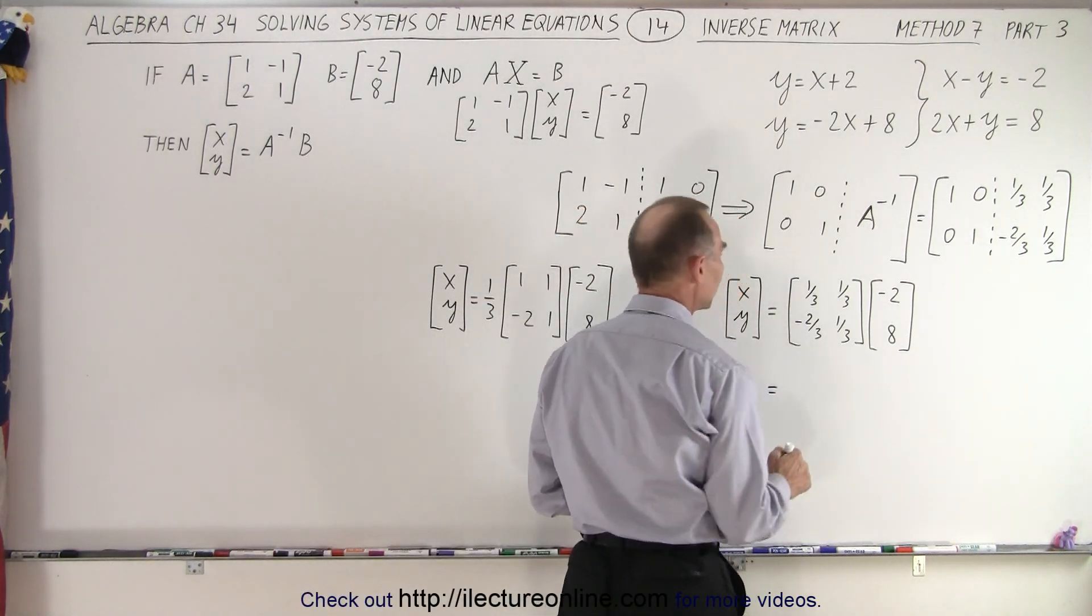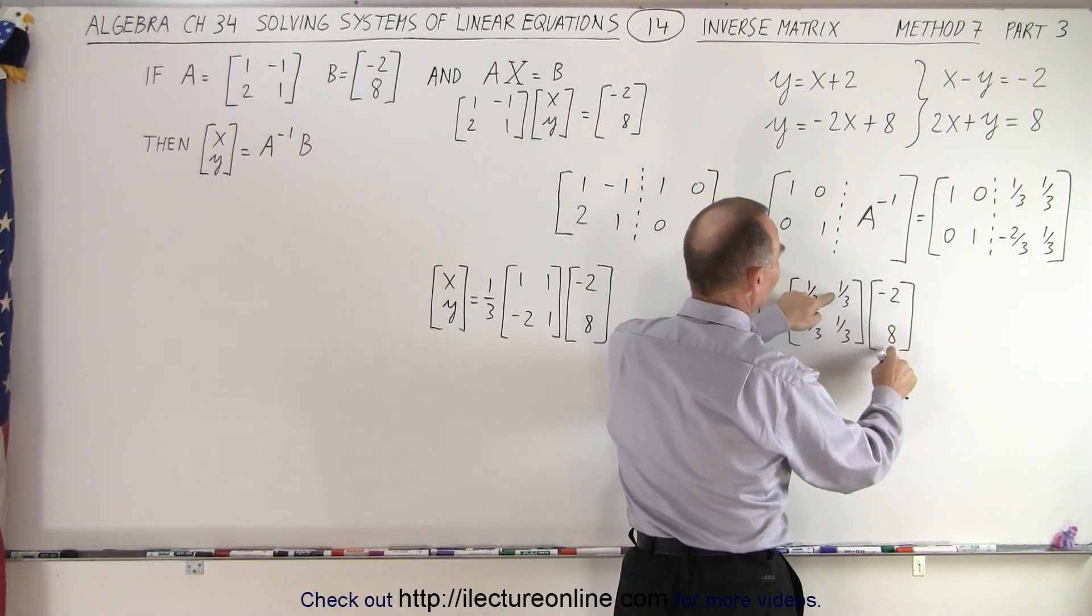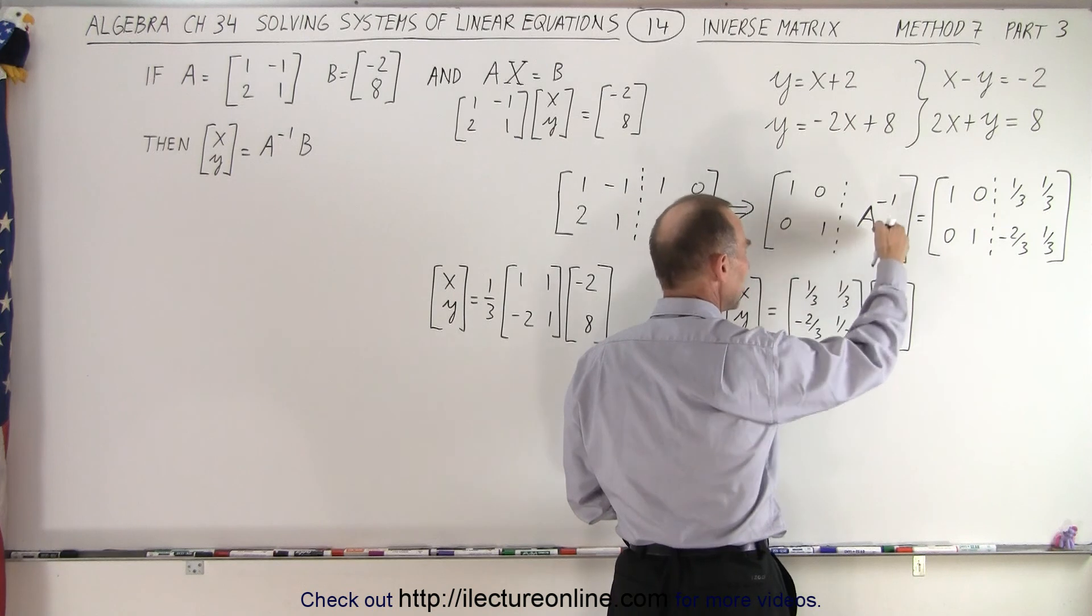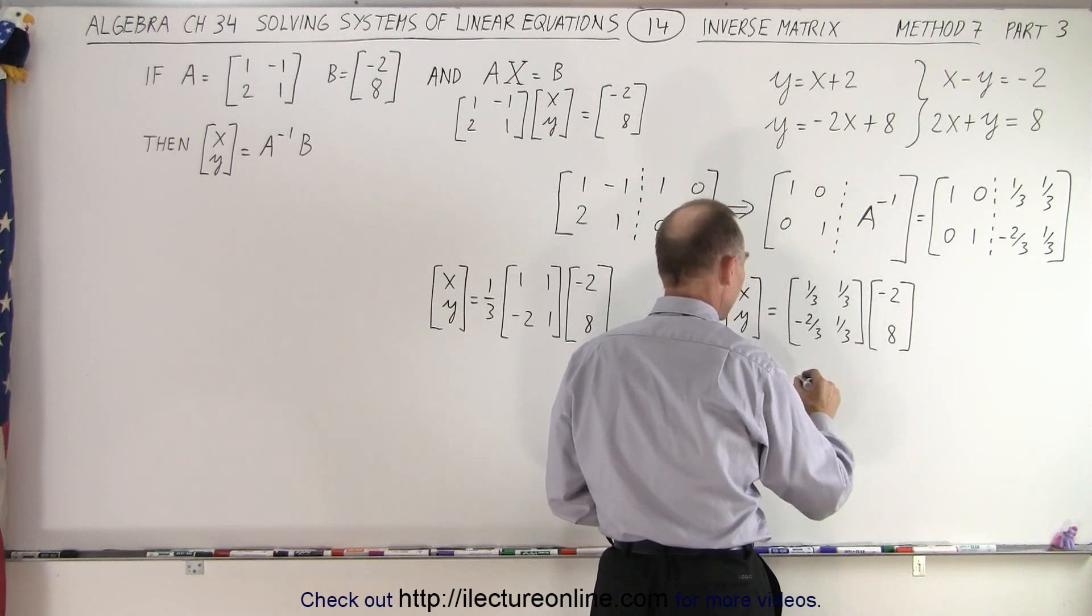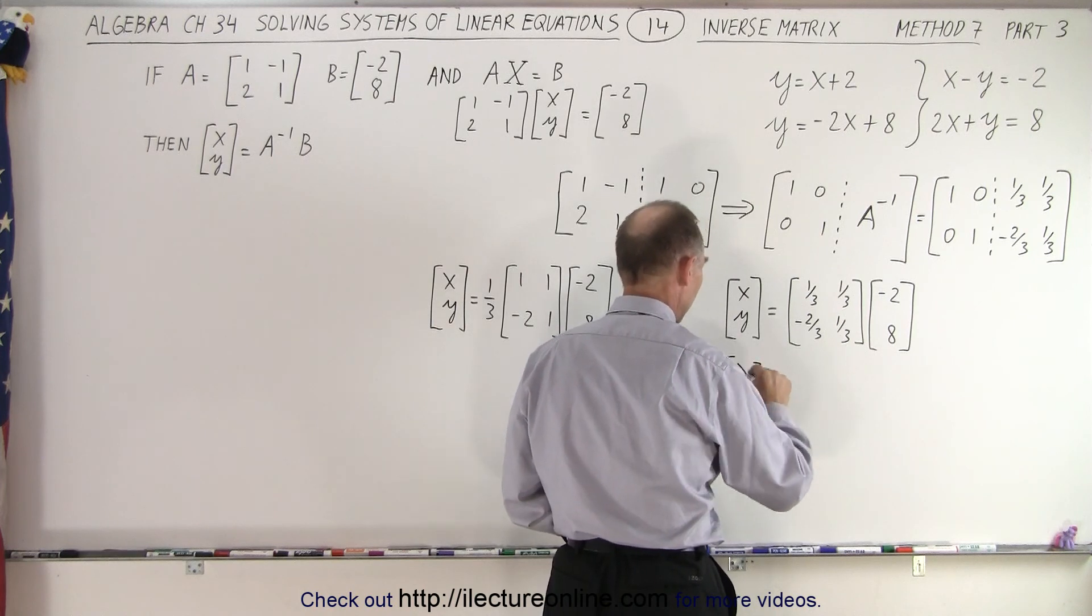So how do you multiply these two matrices? You multiply this times this and you add this times this. You go across here and you go down here. So that means that the x value, x and y, is equal to, in the numerator,